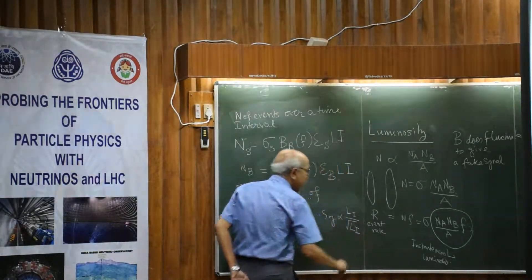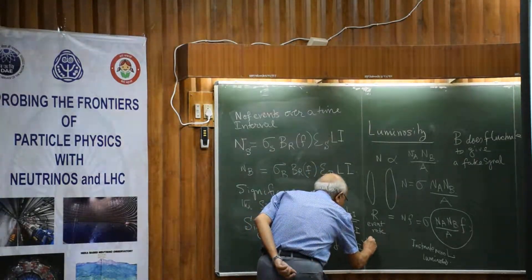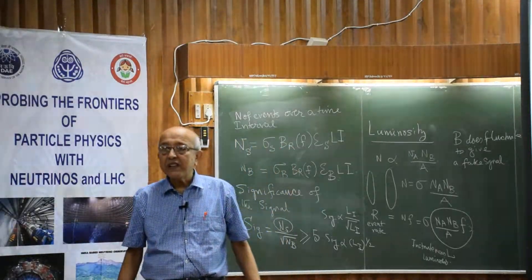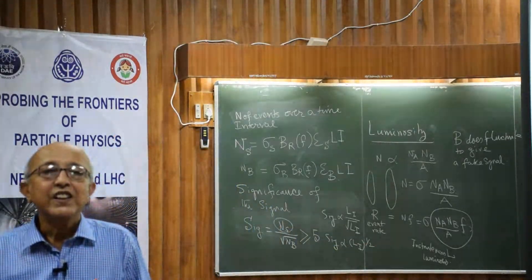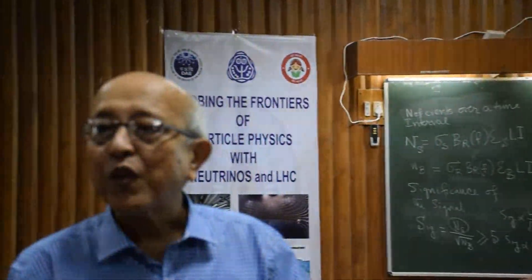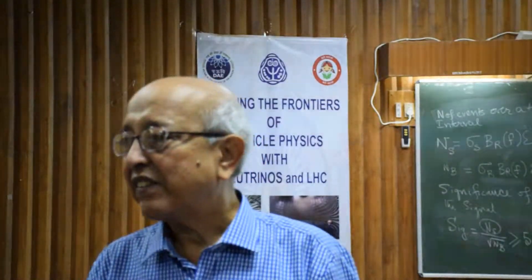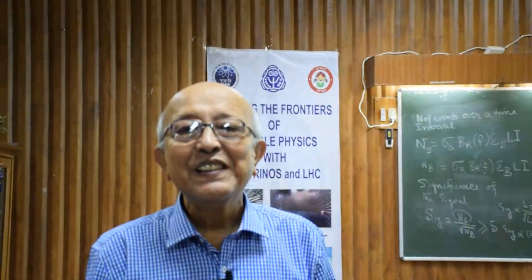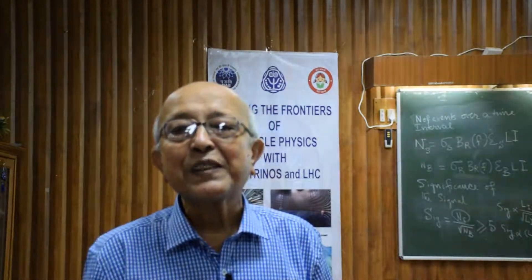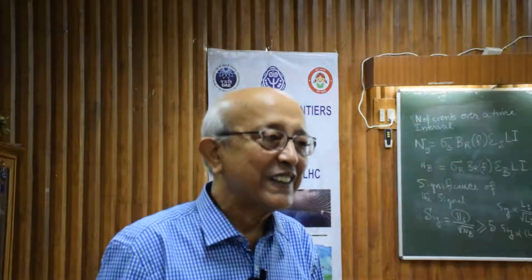Significance S is proportional to the integrated luminosity L_i. There is also a square root of L_i involved. We want significance to be large — at least 5 or more — which means if we are patient and wait for a sufficiently long time, the integrated luminosity will increase and you will be able to achieve the desired statistical significance.